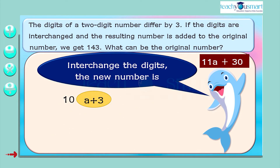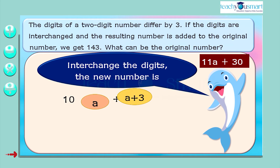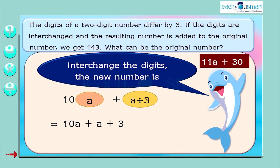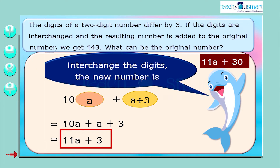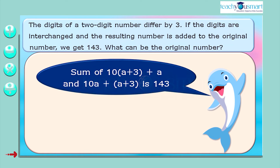If we interchange the digits, the new number is 10 multiplied by A plus (A plus 3), which equals 10A plus A plus 3, equals 11A plus 3. Also given that, the sum of (11A plus 30) and (11A plus 3) equals 143.